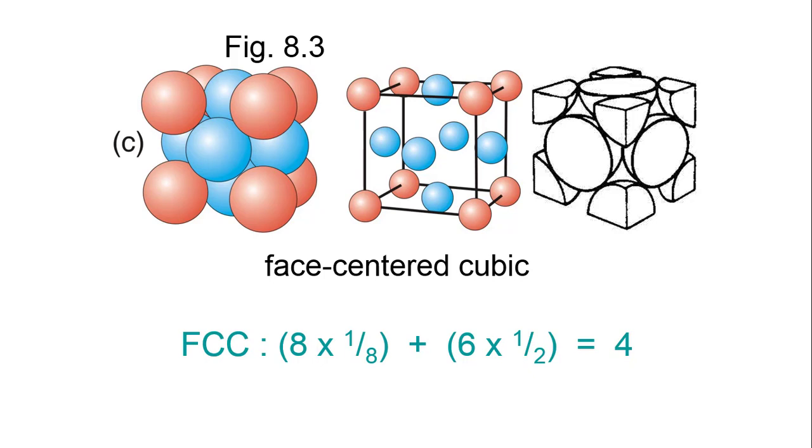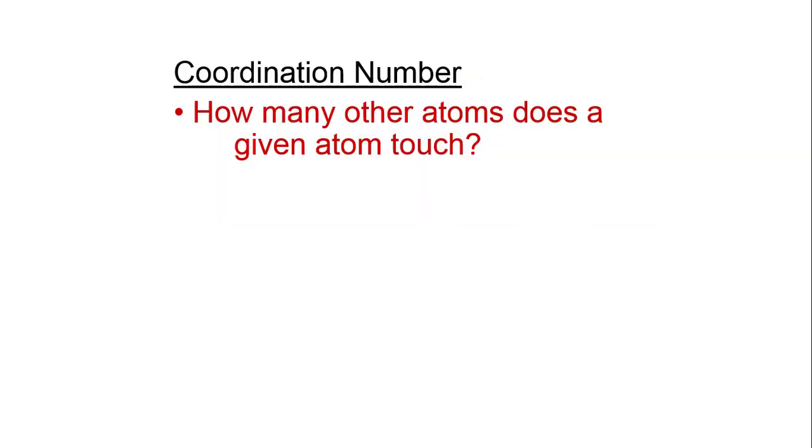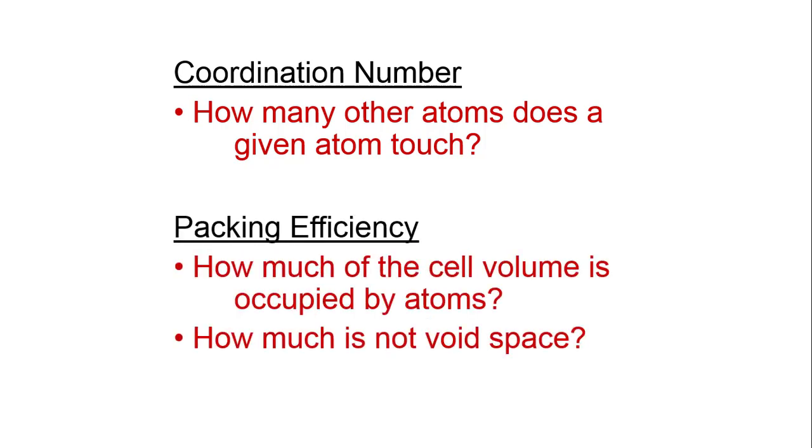There are other differences between unit cells. One is called the coordination number. We ask how many other atoms does a given atom touch—that is the coordination number. Packing efficiency tells how much volume inside a unit cell is occupied by the atoms. In other words, how much is not empty or void space?